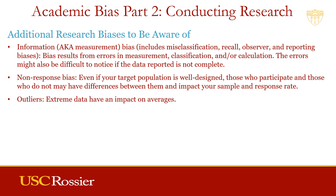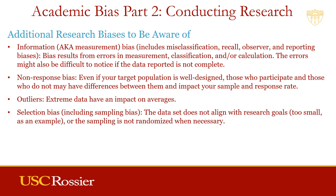Outliers. The extreme data of outliers can have a great impact on averages, particularly if you have a small sample. You'll want to decide how to report the findings, perhaps avoiding averages. Selection bias, which includes sampling bias, occurs when the data set does not align with research goals. For example, you might not get a large enough sample, or the sampling might not be randomized, leading to non-response bias and other risks.